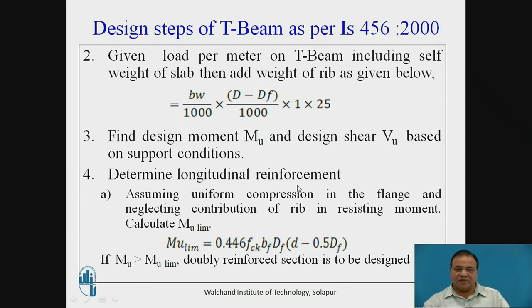Determine the longitudinal reinforcement. So for determining the longitudinal reinforcement, first of all we assume the uniform compression in the flange and neglect the contribution of rib in resisting the moment. So we calculate MU limit. MU is equal to 0.446 FCK BF DF into D minus 0.5 DF. So this D minus 0.5 DF this is lever arm and this is 0.446 FCK BF into DF. This is your compression C. So if MU is greater than MU limit, doubly reinforced section is to be designed.